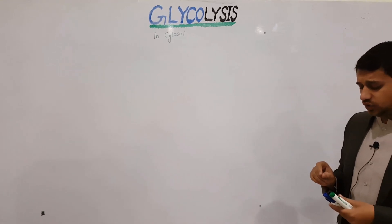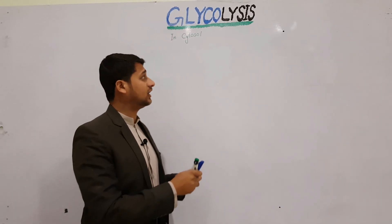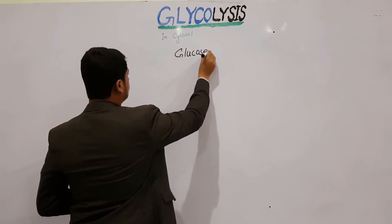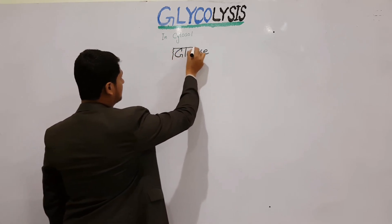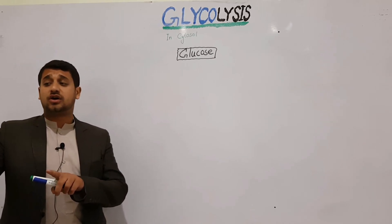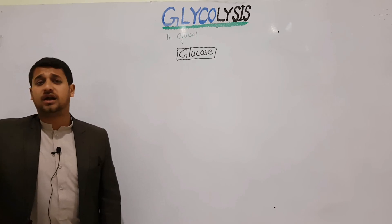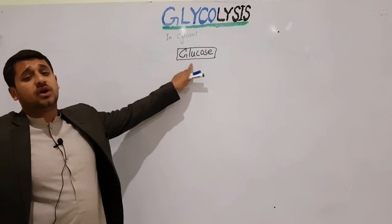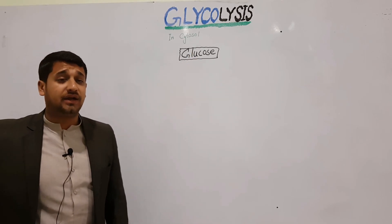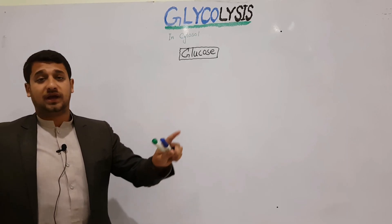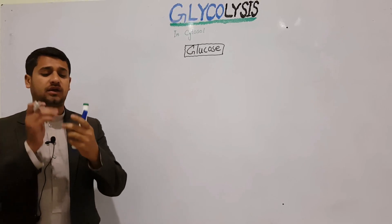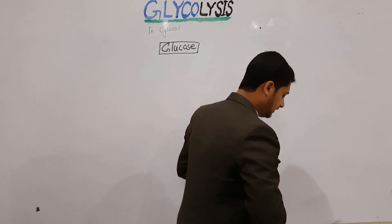The glucose molecule used in glycolysis — what form will it be in? There are two shapes of a glucose molecule: one is a straight chain and the second is a ring structure. In glycolysis, the glucose in the cytosol will be in ring form, because monosaccharides form a ring shape when placed in water, and cytosol contains around ninety percent water.